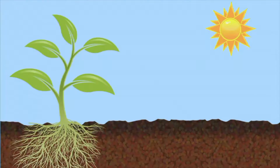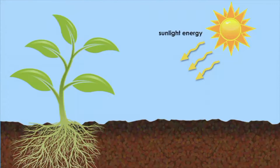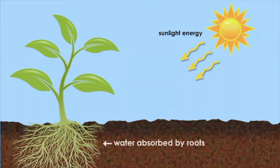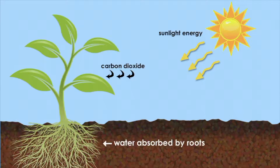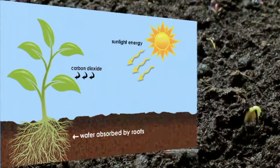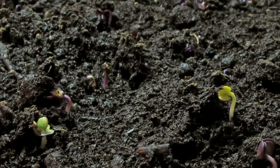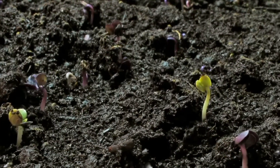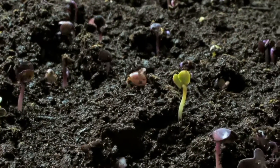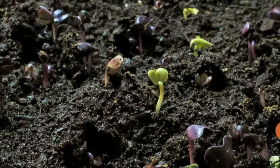In photosynthesis, the plant absorbs energy from the sunlight, water, and carbon dioxide. Plants use photosynthesis to get energy.